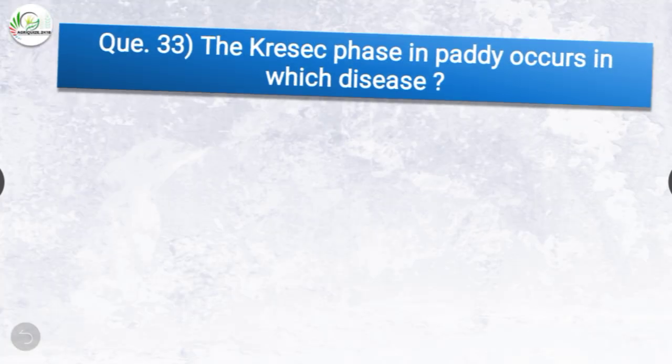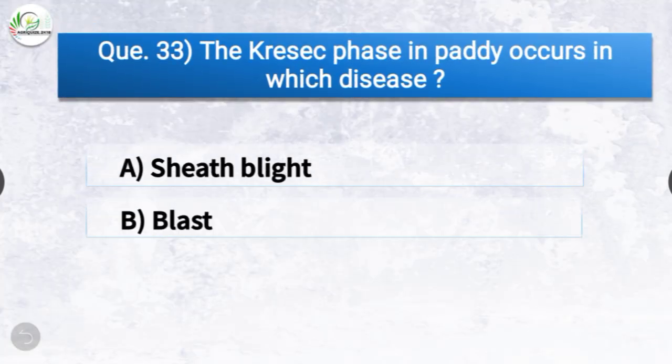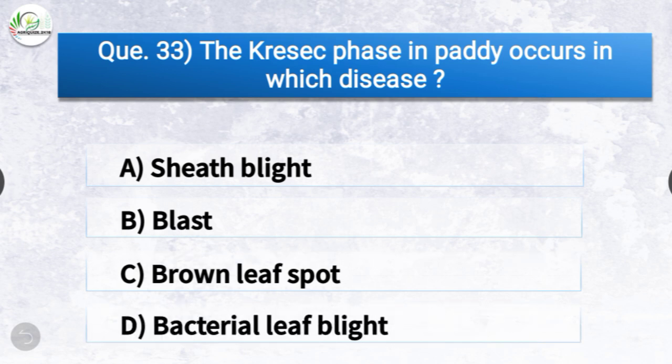Question number thirty-three: The kresek phase in paddy occurs in which disease? The options are sheath blight, blast, brown leaf spot, or bacterial leaf blight. The correct answer is option D, bacterial leaf blight, which is caused by Xanthomonas oryzae. The kresek phase in paddy occurs in bacterial leaf blight.